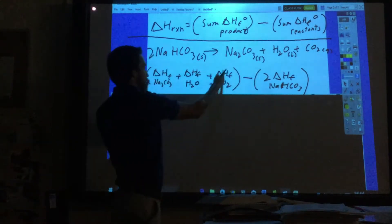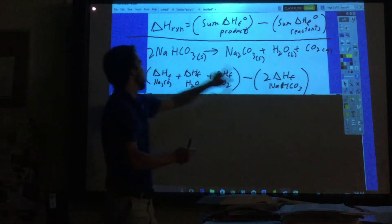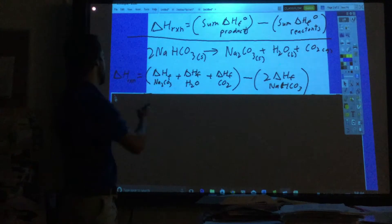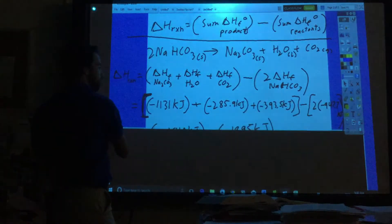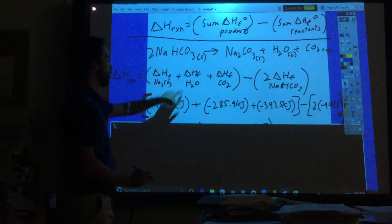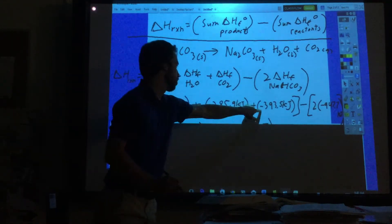Carbonate, water, CO2 - your products all added together minus two times the sodium bicarbonate. So then if we just look at those values for the sodium bicarbonate, for the water and CO2, keep track of your signs.